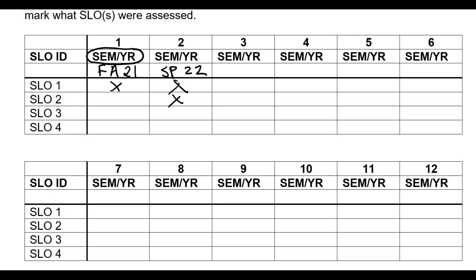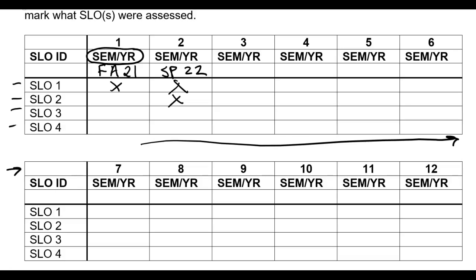We do this so we can track and show that we've assessed all the SLOs within the six-semester time frame. By the time we get down to the end, all of those rows — 1, 2, 3, 4 — should have an X somewhere. Then the cycle would start again with year 7. And that's it for the form. Good luck, and have a great semester.